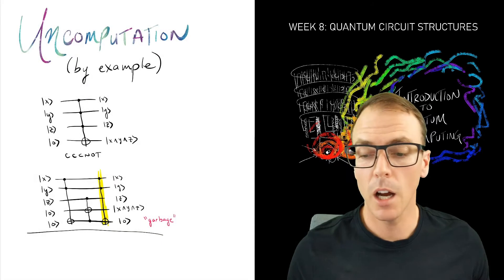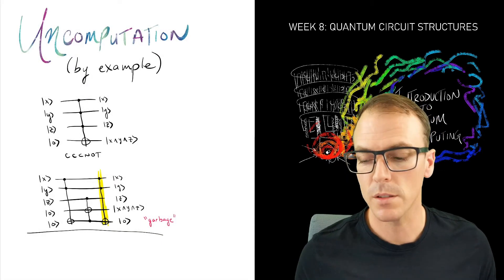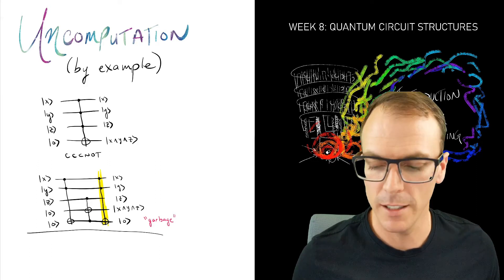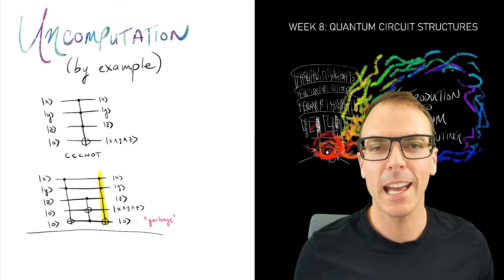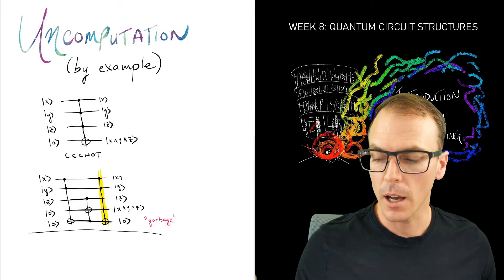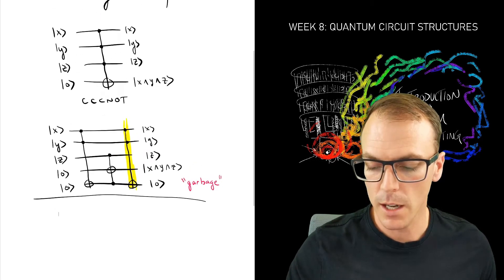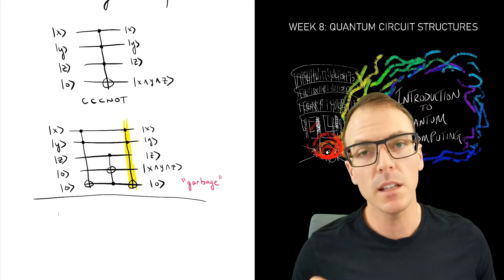Last time we looked at uncomputation by example, this CCCNOT gate, which looked at the AND between three binary variables, and how we could implement that with just these CCNOT gates.